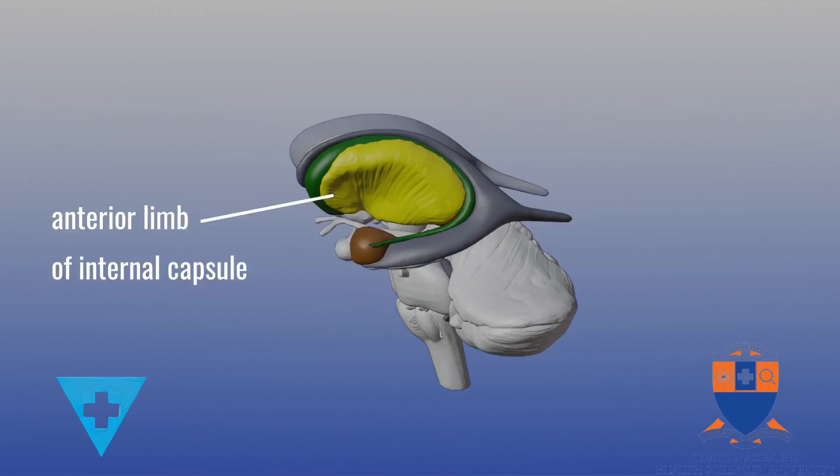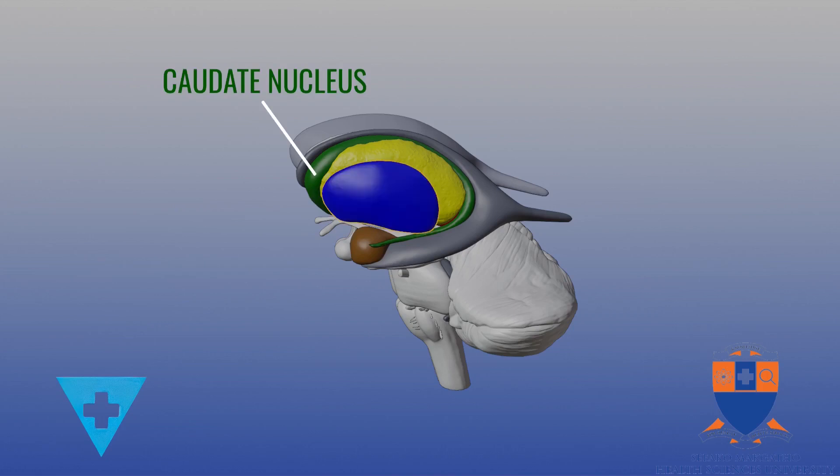The anterior limb of the internal capsule separates the caudate and the lentiform nuclei. However, its most rostral section comprises the corpus striatum with the lentiform nucleus putamen.